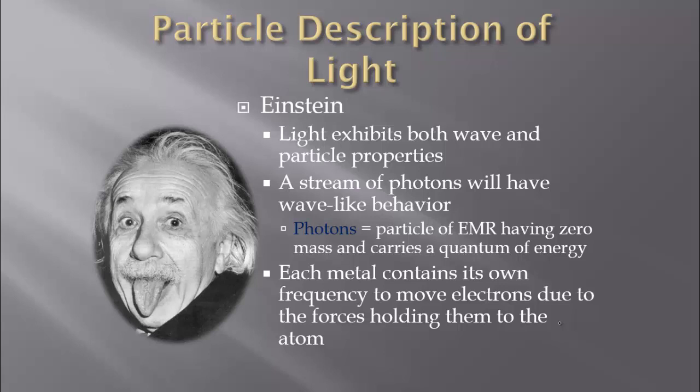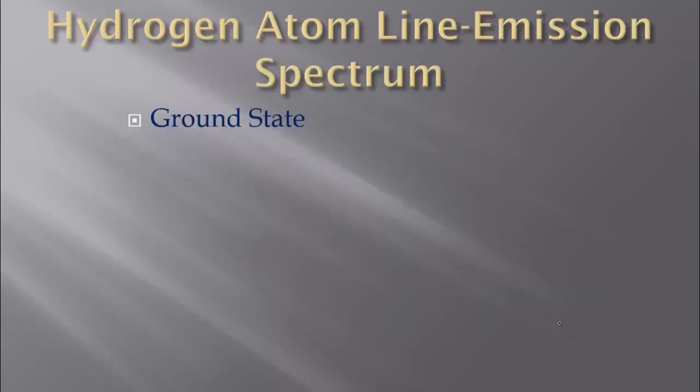Remember that a quantum is that minimum amount of energy. Each metal is going to contain its own frequency to move electrons, due to the forces that hold them to the atom — that's why electrons don't fall into the nucleus. There's something holding them at a distance from the nucleus. Each metal has its own frequency that will be able to move electrons, and remember energy and frequency are directly related.